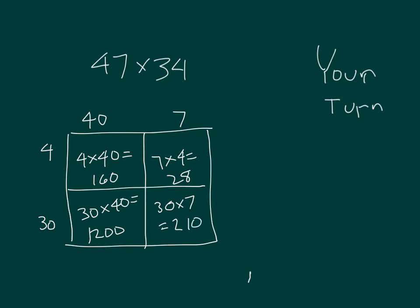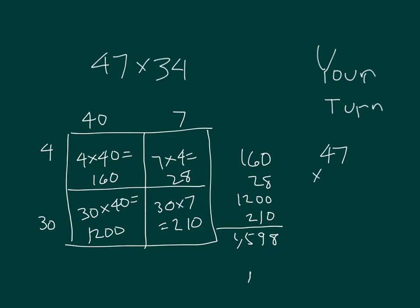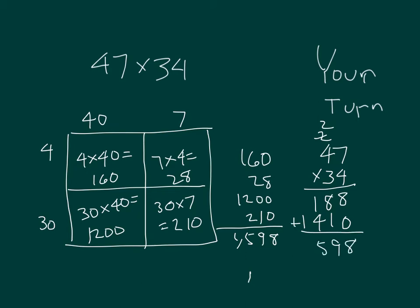Continuing with 47 times 34: 30 times 7 is 210, and 7 times 4 is 28. Adding those partial products together gives us 1,598. The standard algorithm confirms this: 4 times 7 is 28, regroup; 3 times 4 is 12, plus 2 is 14. Same as our partial products with our area model, we get the product of 1,598. 47 times 34 equals 1,598.